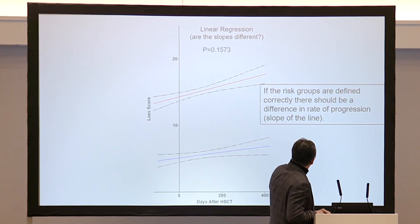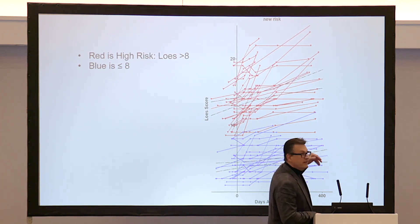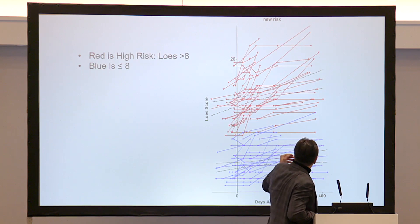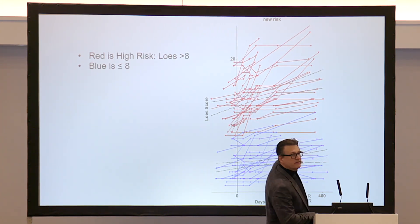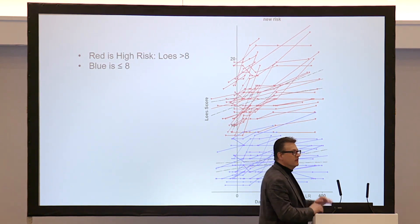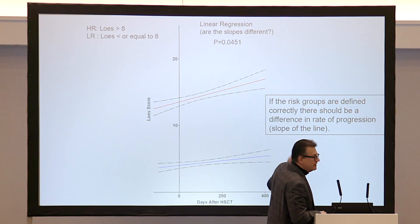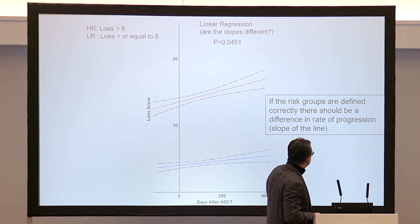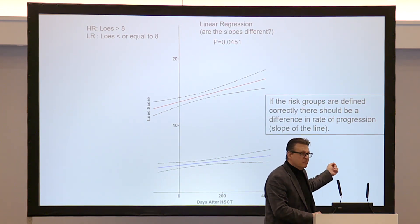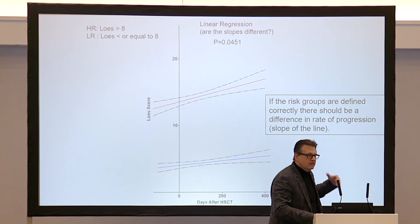What we did is change the score: anyone greater than 8 is high risk, anyone 8 or less is low risk. Now the red and blue lines actually separate — there's one or two overlaps but a much cleaner picture, with the groups parsed apart much better. When you average the lines and look at the slopes, the red line is much steeper than the blue line, and the statistics confirm that. So we actually probably better define risk groups using a score of 8 and less for low risk — not 9 and less.